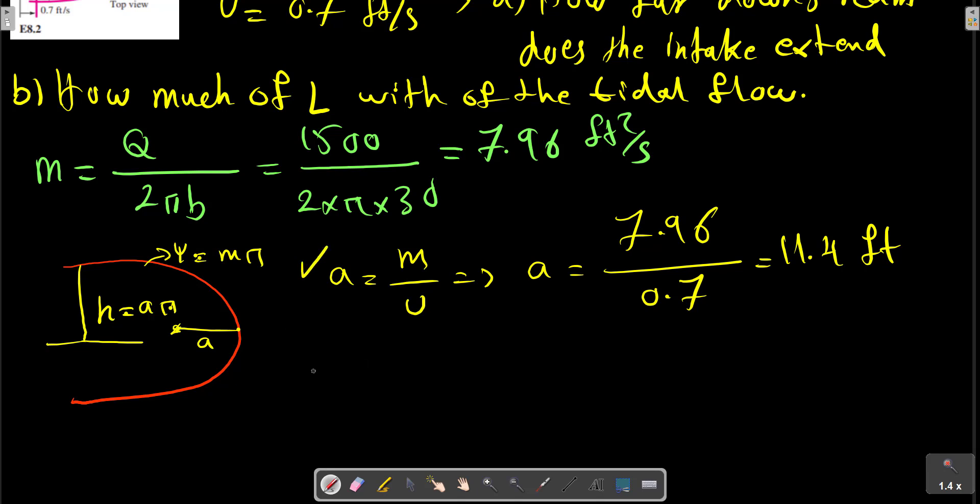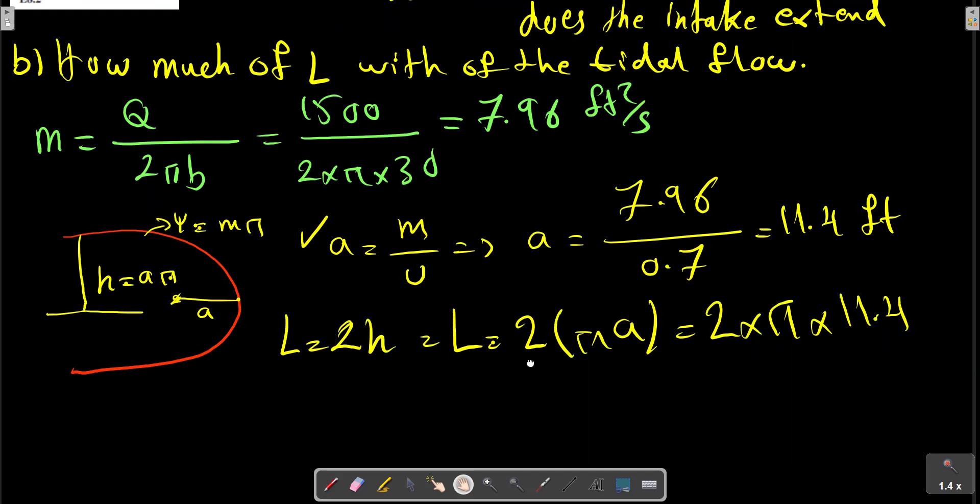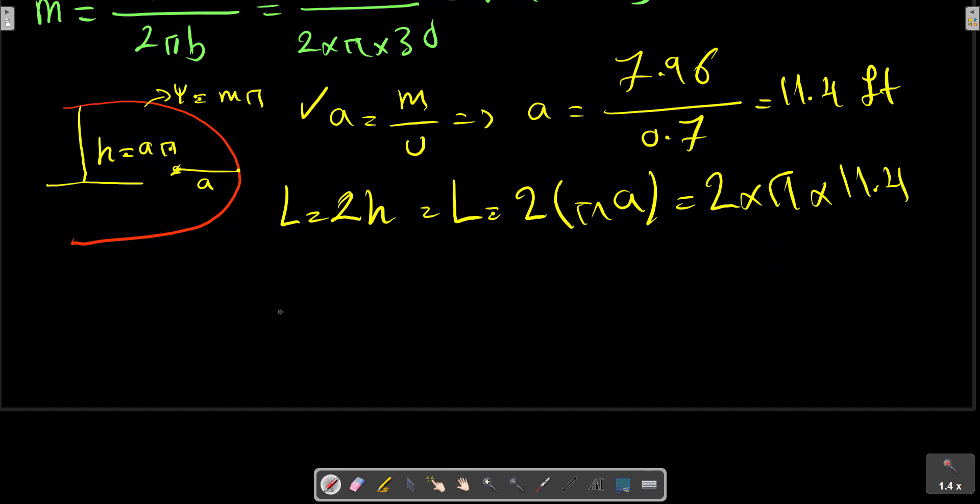And for L, L equals 2H, so L equals 2 multiplied by 2πA. We can calculate L equals this quantity. We can also calculate the half body of the streamline ψ equals 71 feet.